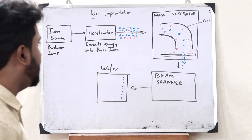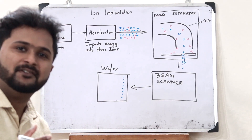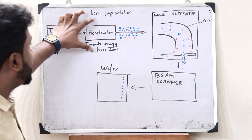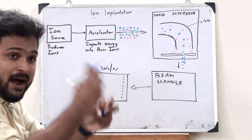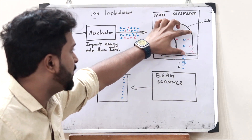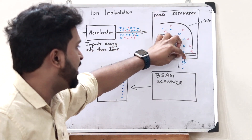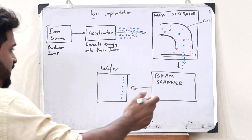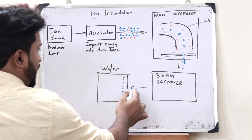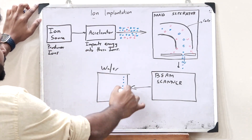This is a simple process of ion implantation. The ion source produces ions and they get accelerated at the accelerator by imparting energy onto them. Once accelerated, it passes through the mass separator which deflects only these particular ions at an exact 90 degrees, and then it goes to the beam scanner. The beam scanner then focuses these particular ions onto a wafer, thereby bombarding the ions onto a particular wafer.